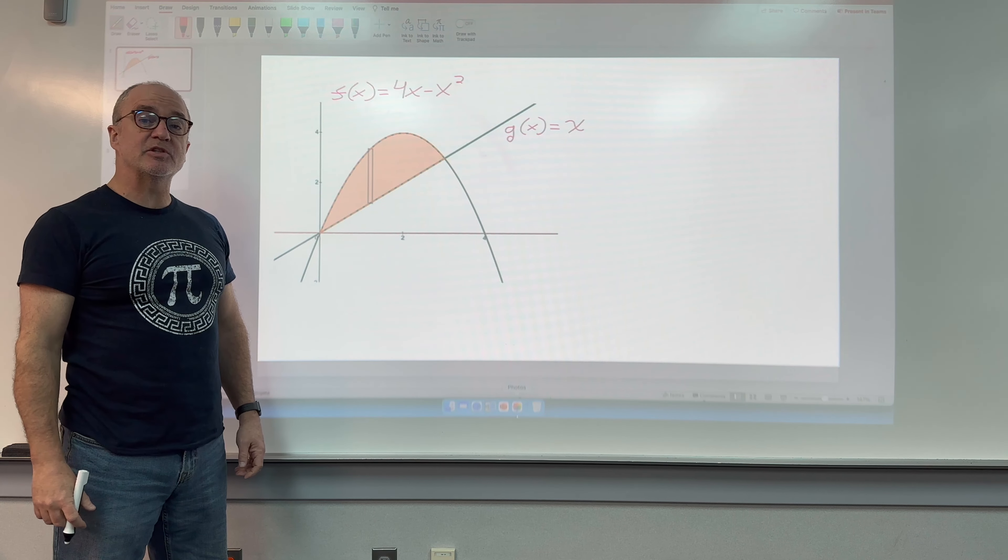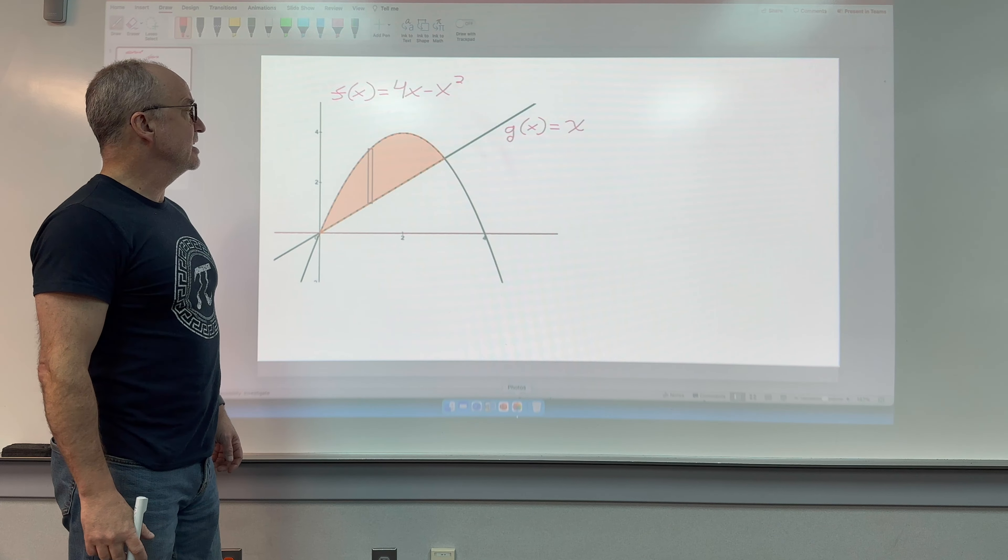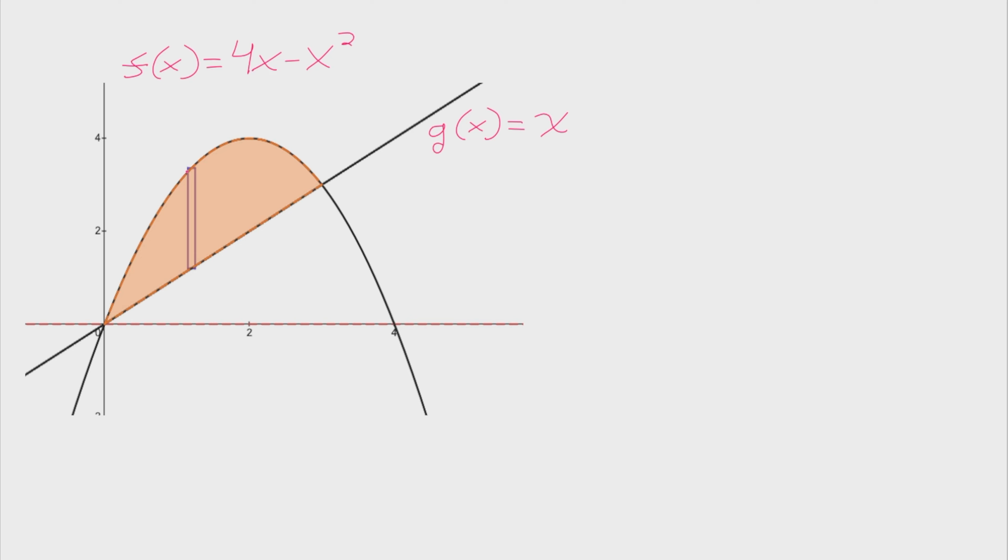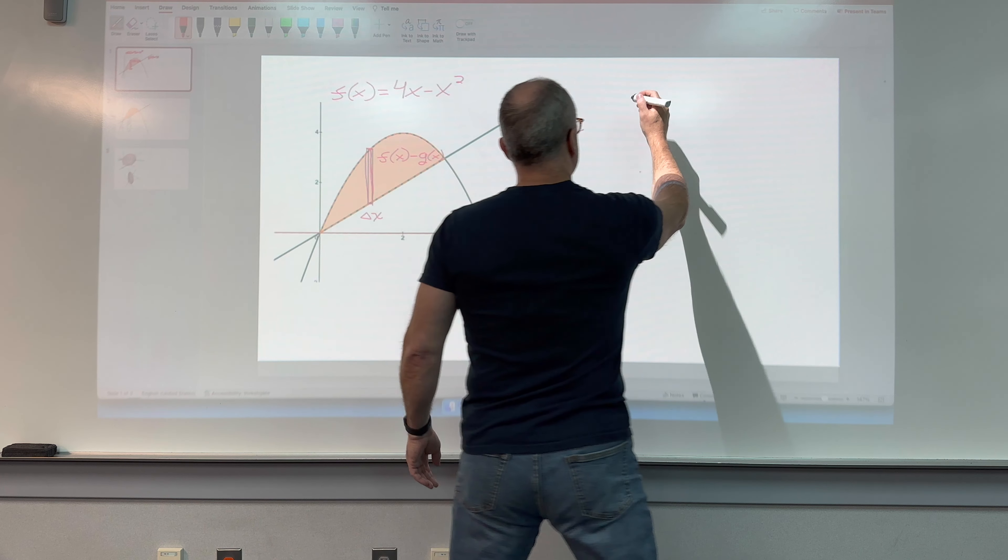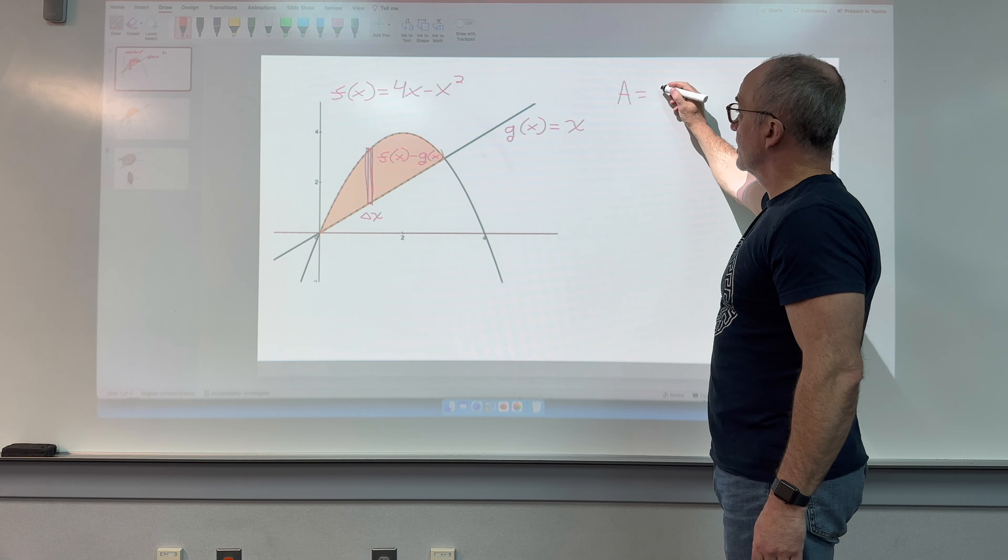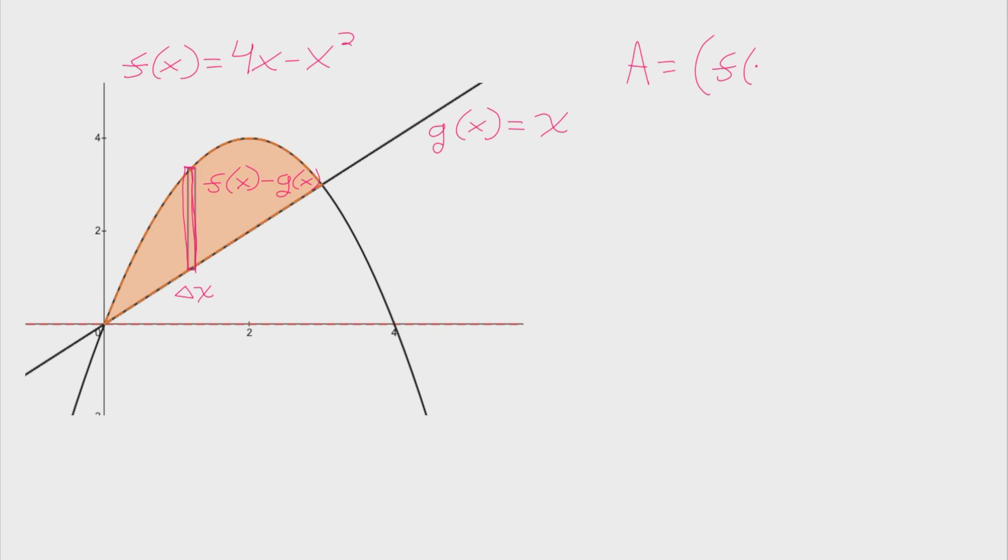Quick review, I'm going to find the area between these two functions, and the way I like to do that is first make sure that I have a nice representative Riemann rectangle. The base of the rectangle will be delta x. The height of the rectangle will be function on top minus the function on the bottom, which in this case is f of x minus g of x.